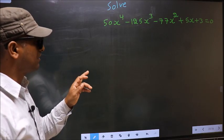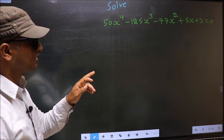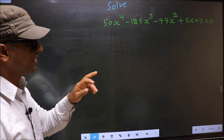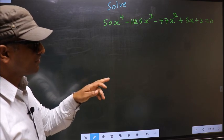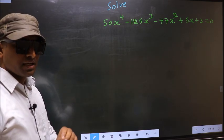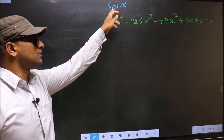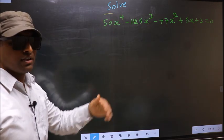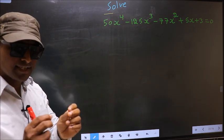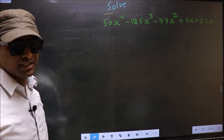Solve 50x⁴ minus 125x³ minus 77x² plus 5x plus 3 equal to 0. Here we are told to solve, so first we should do a rearrangement of the given equation.